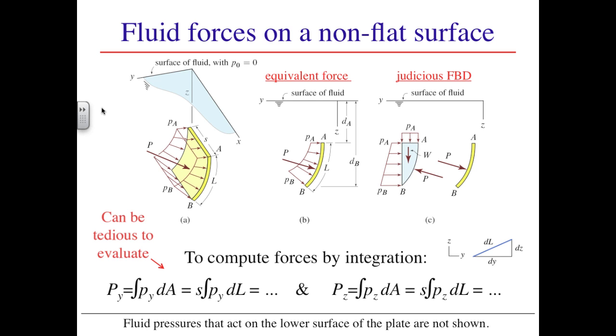In looking at the free body diagram of the submerged surface in the middle figure, we can see right away that there is a complication with the curved surface that is absent with the flat surface. Because the orientation of the pressure is everywhere normal to the submerged surface, and because the unit normal of the curved surface is changing continuously along the surface, we now have this issue. The pressure distribution is changing both in magnitude and direction continuously as we move from A to B.